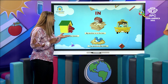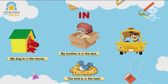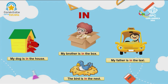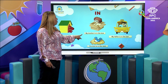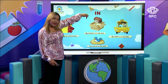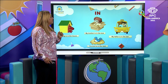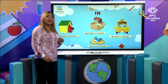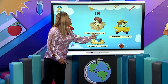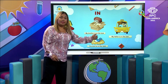Where is the bird? The bird is in the nest. And the last one: my father is in the taxi. So let's review: my dog is in the house, my brother is in the box, the bird is in the nest, and my father is in the taxi.